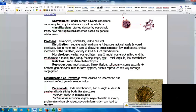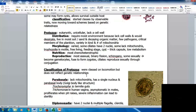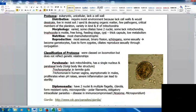For nutrition, most are chemoheterotrophic. For reproduction, most are asexual and do binary fission or schizogony. Some do sexual reproduction and become gametocytes that fuse to form zygotes. The ciliates reproduce sexually through conjugation. Looking at classifications of protozoa, they were classed on locomotion but that did not reflect genetic relationships.